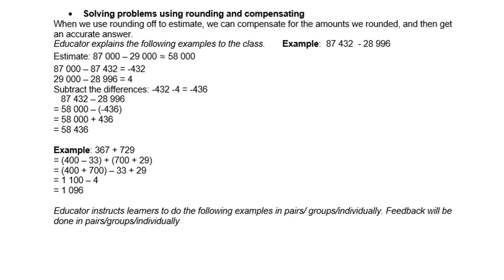For the next example, when we add 367 plus 729 using rounding and compensation: we rewrite as (400 minus 33) plus (700 plus 29), which gives 400 plus 700 minus 33 plus 29, equalling 1,100 minus 4, which is 1,096.